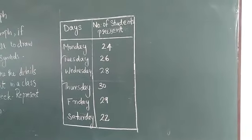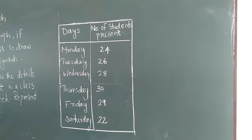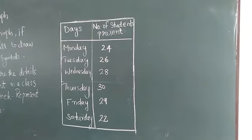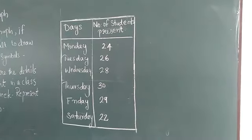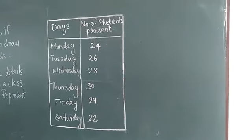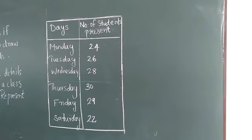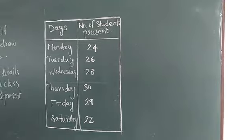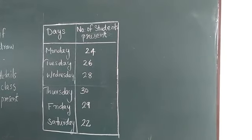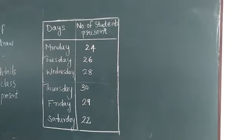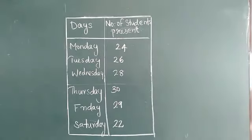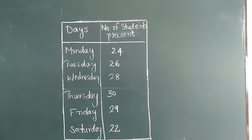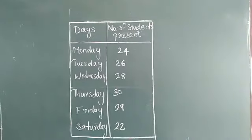First column days. Second column number of students present. Monday to Saturday, the different days attendance is given there. Here maximum of 30 students and minimum of 22 students. So it is not easy to draw 30 symbols in a column or 22 or 29 etc.